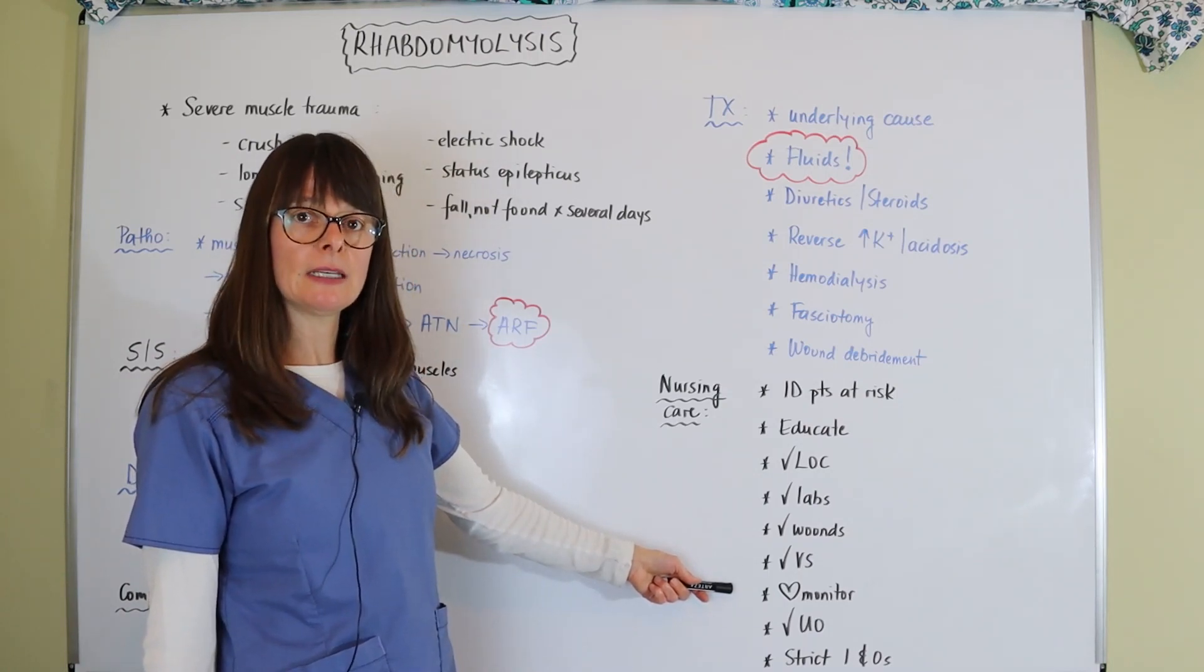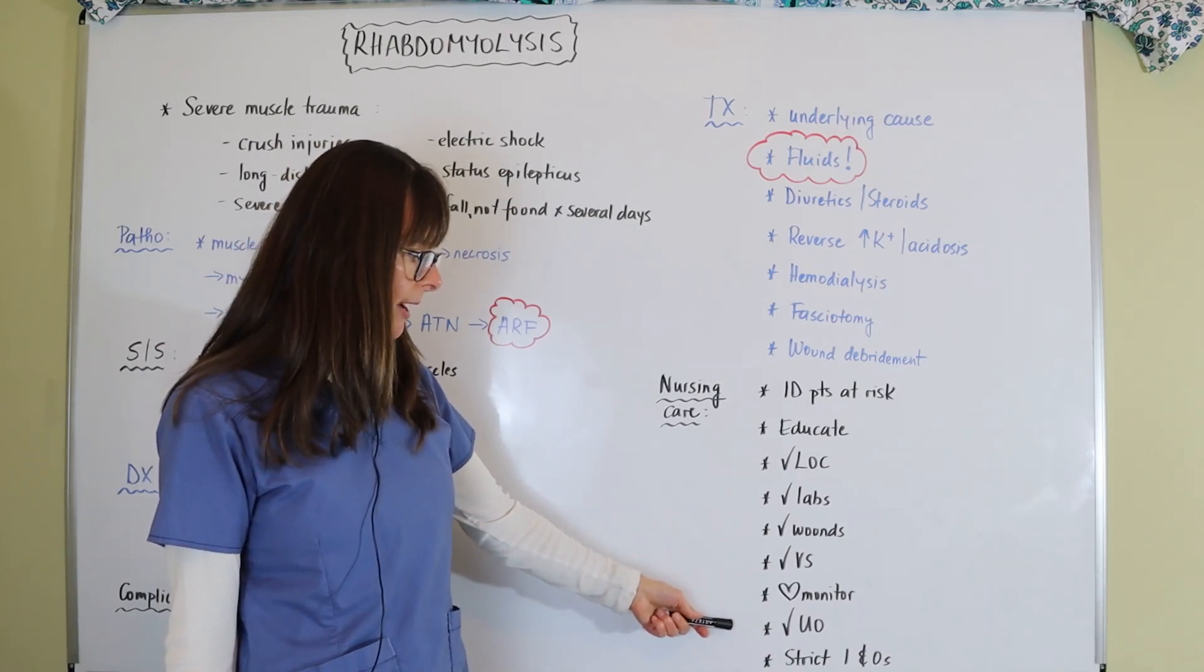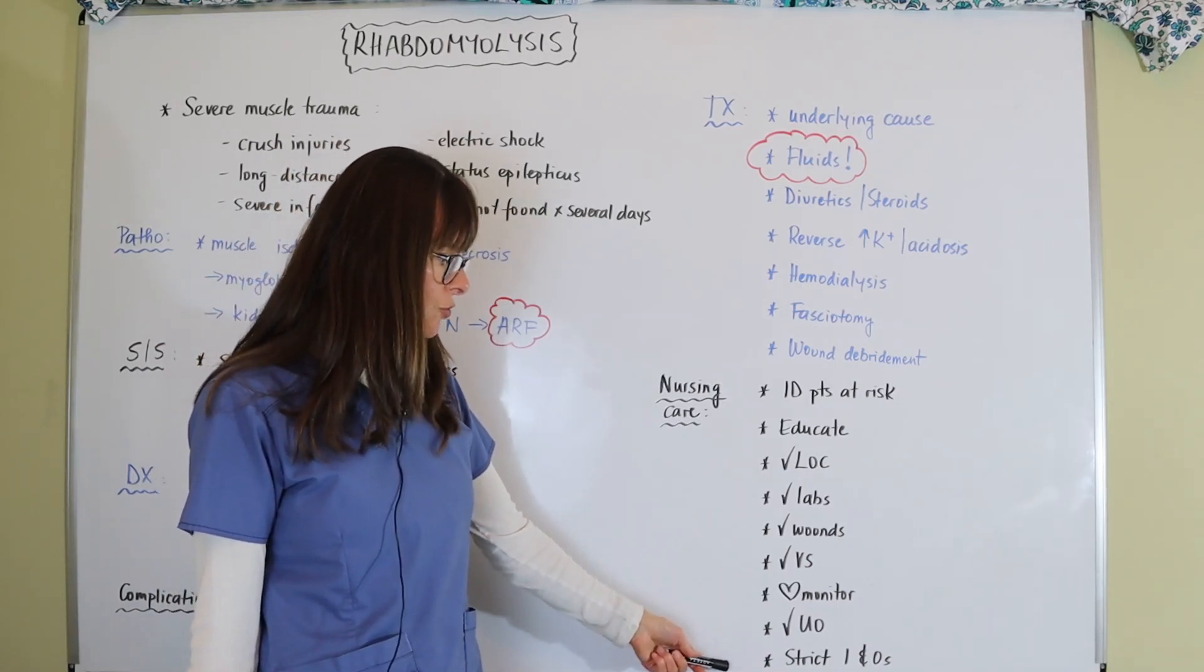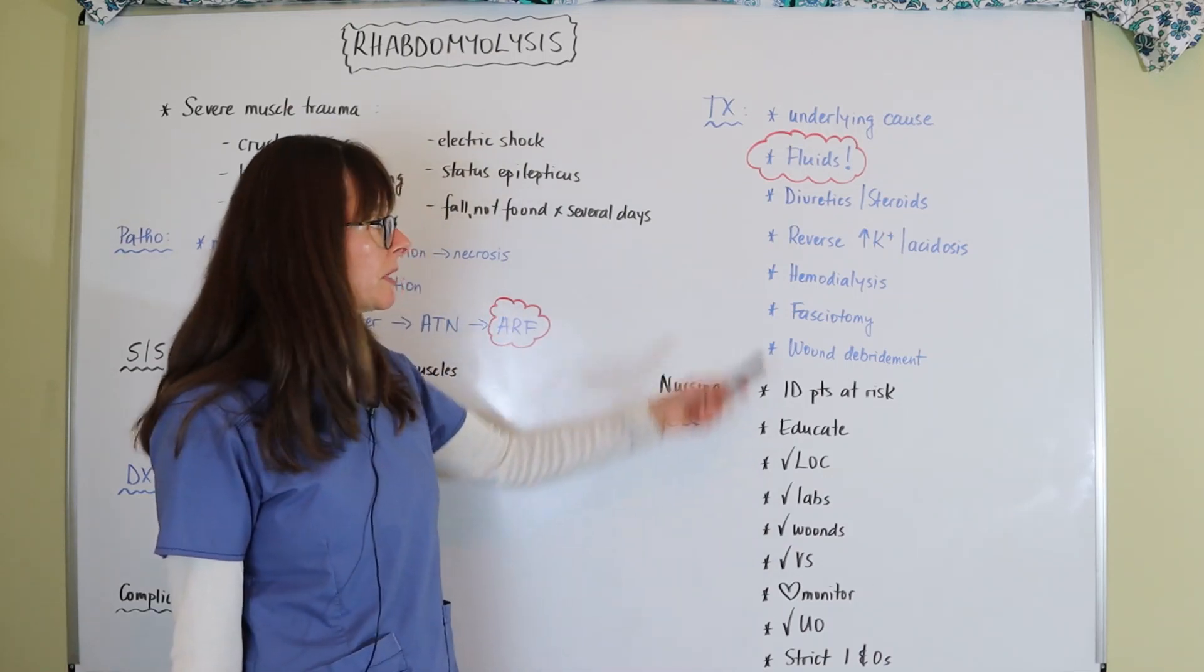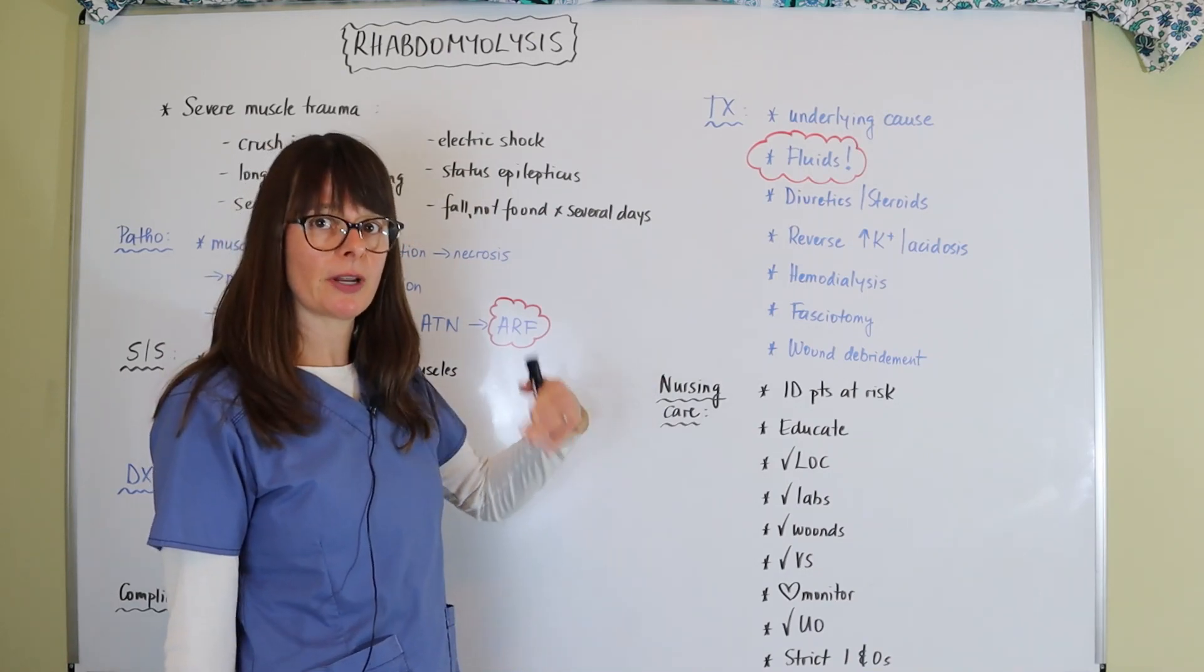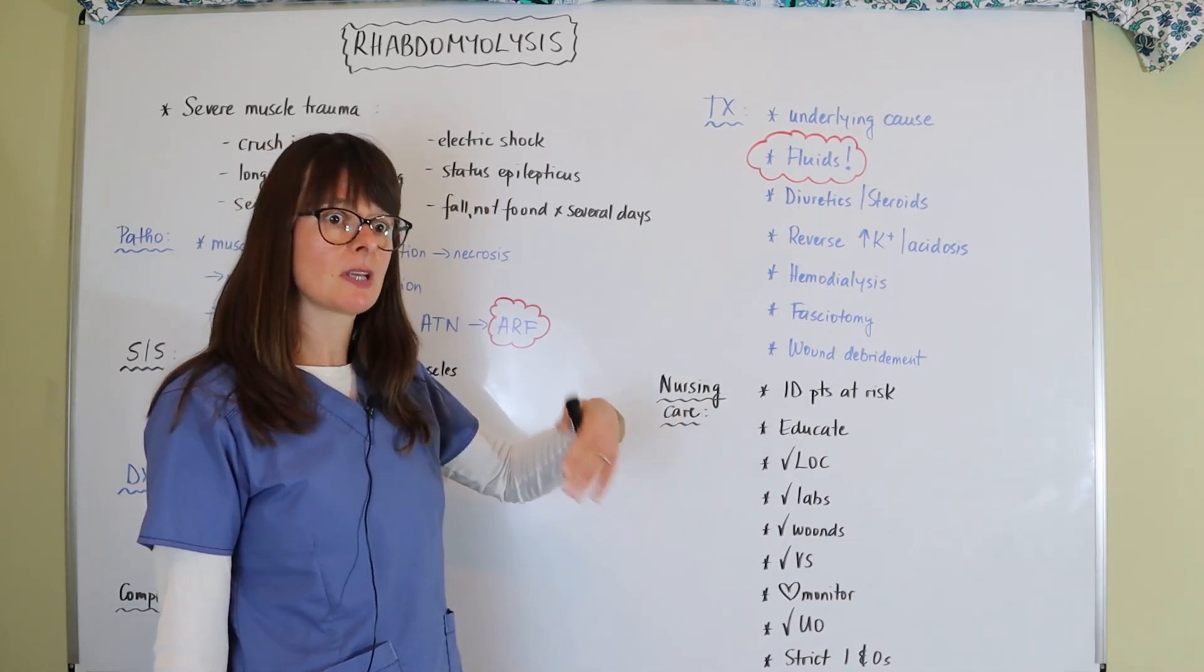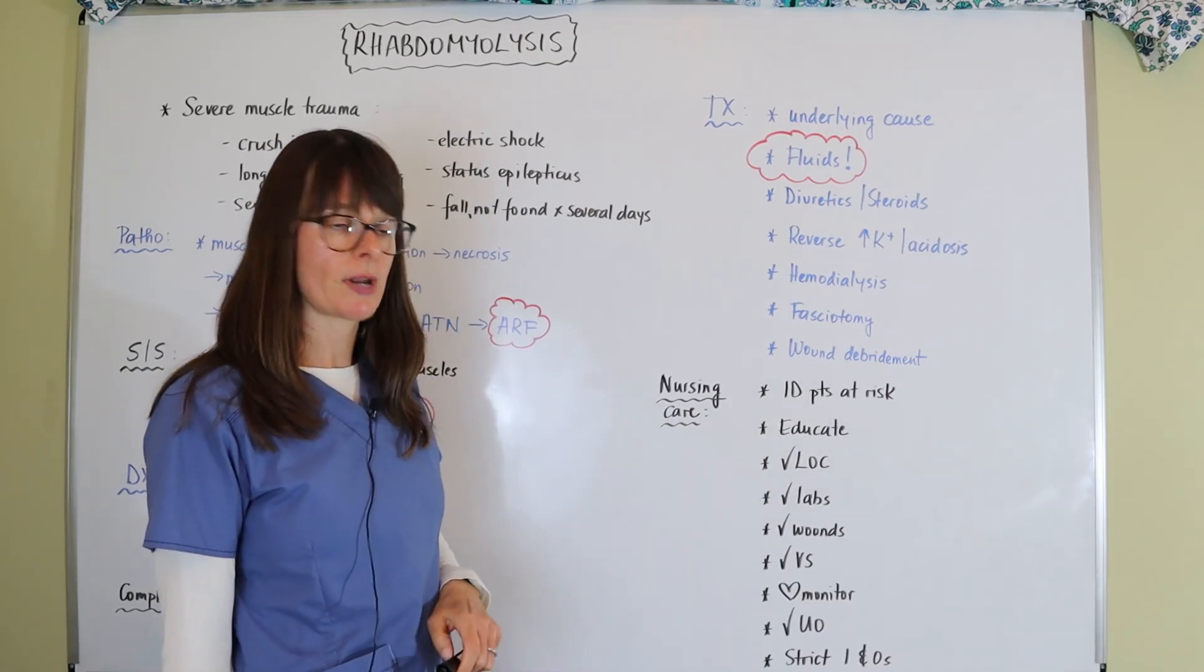And then as anything with kidney issues, we always want to be very particular about checking urine output and logging strict I's and O's to make sure we're not fluid overloading the patient because that certainly is a risk here when the kidneys are not able to filter and the treatment is to give them fluids. So then the patient can't excrete it and now we have fluid volume overload or excess.